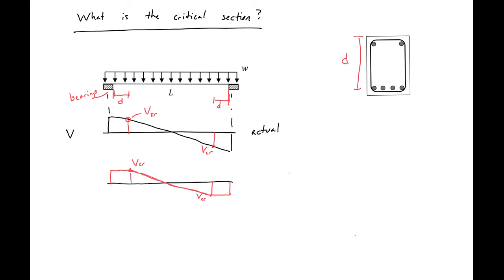So when we're finding our shear and what shear to use for our VU, if we're only designing our beam at one section, this would be our critical section. So this would be our VU that we would design for. And note that this critical section can only be used for normal loading scenarios where we don't have any concentrated loads that are close to the support.